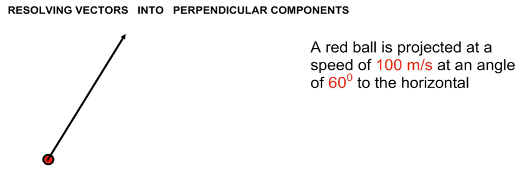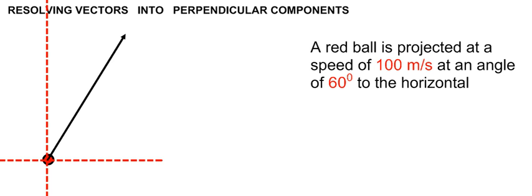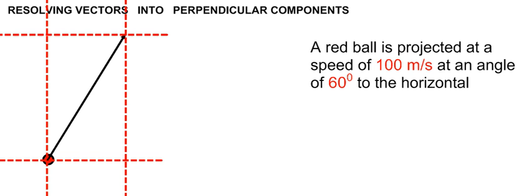Projecting a ball in such a way, we notice that it has a horizontal velocity as well as a vertical velocity. We can break the velocity of 100 meters per second into components along the vertical and along the horizontal. To do this, we draw vertical and horizontal lines along the base of the vector and along the tip of the vector so that we form a parallelogram.